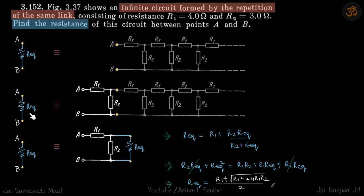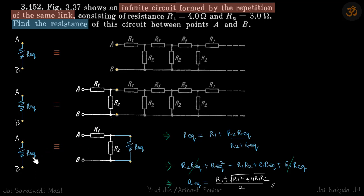If you look at the right side of this plane, the structure is similar, and the resistance of this structure is R equivalent. So if I replace this right side with one R equivalent in parallel, it is still the same. The resistance across A-B is still R equivalent, and we have added one more R equivalent in parallel.